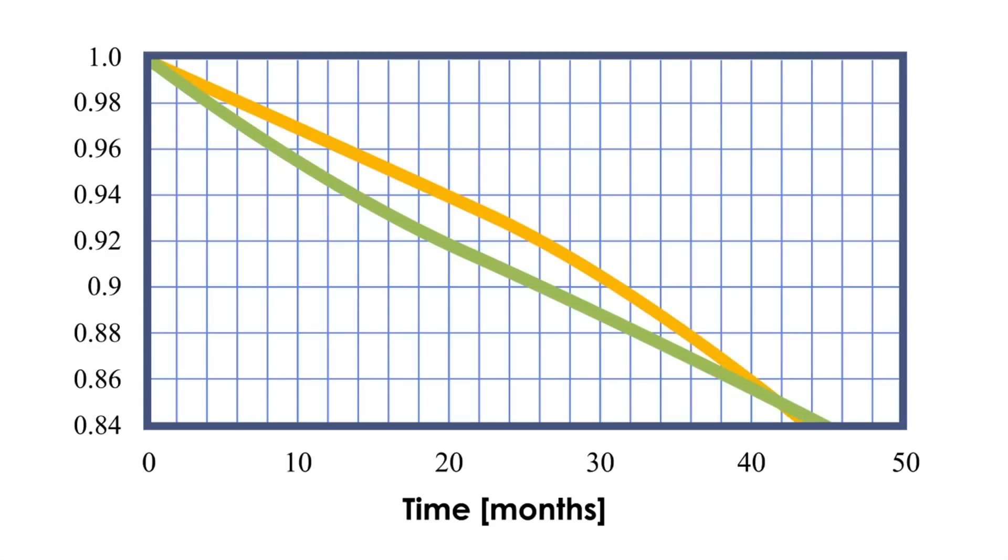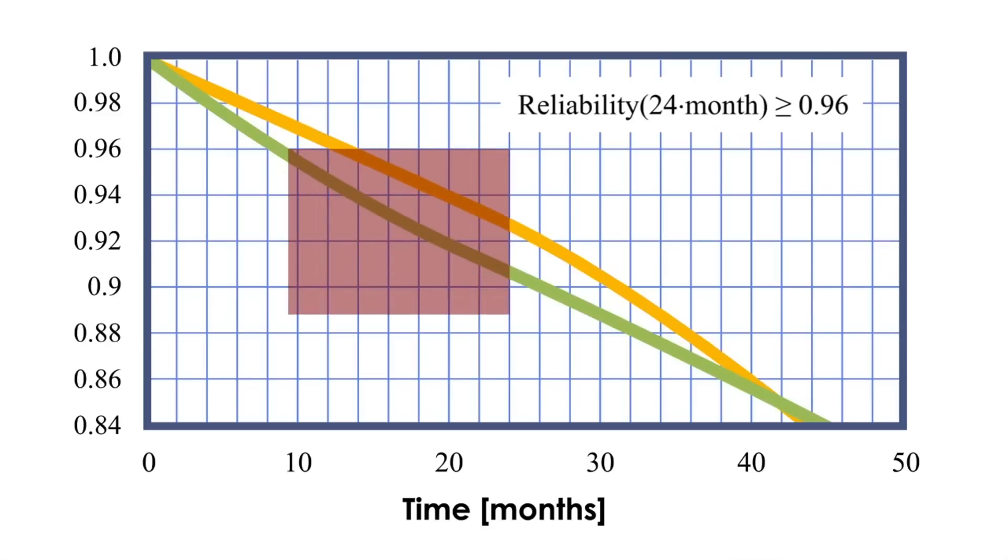The solution must therefore begin with a redefinition of reliability target. We can do that by setting certain fixed points in time and a minimal reliability at those points. Let's say that we want to have less than 4% failure rate by the end of the warranty period.